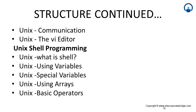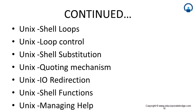We will also cover pipes and filters in UNIX — how different processes work. Then we will have UNIX communication and the UNIX VI editor. Just as we have Notepad in Windows, we have a similar editor in UNIX called the VI editor. Then we will continue on UNIX shell programming — what is shell, what are variables, special variables, and arrays.